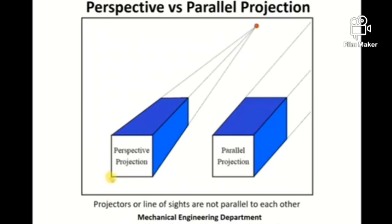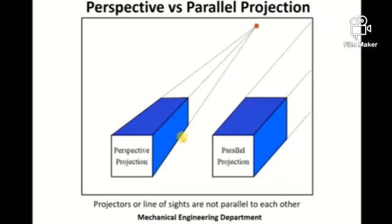This property of perspective projection gives the element of realism in the drawing. The height of the face which is closer to the observer appears larger compared to the height of the rear face which is far away from the observer. This gives just an element of realism — the closer face is bigger in size compared to the face away from the observer, which is smaller in size.